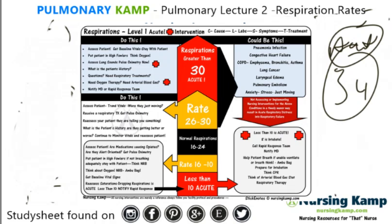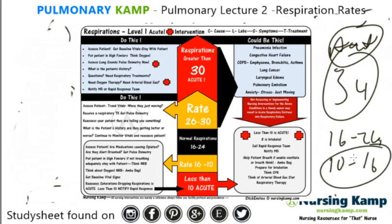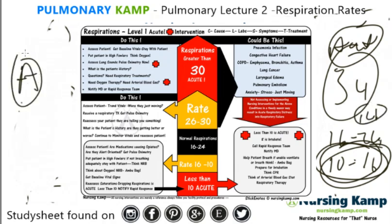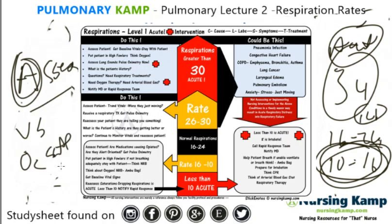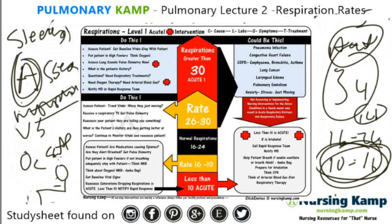Now let's talk about less than 16. Normal was 16 to 24. We'll go from 10 to 16 next. This is an interesting number because a patient could be relaxing and they could be 14. So you always assess the patient first — what does the patient look like? Assess that. What are their vital signs? What's their O2 saturation? Are they in the high Fowler's position, or are they sleeping? Did they receive morphine — a medication that might have slowed down their respirations? So we always look at the patient first; we just don't react to the numbers.